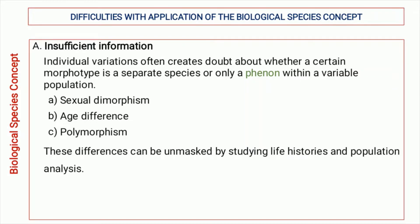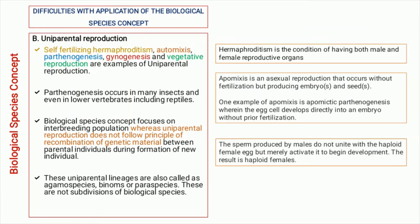Next is age difference — the immature and mature stages can be completely different from each other. Next is polymorphism, meaning different body forms exist within a single species. So if the data regarding the particular species you are considering is insufficient, you can face difficulty while implementing the biological species concept.